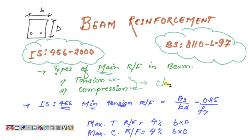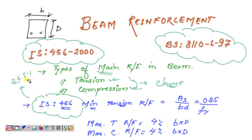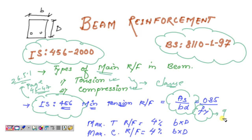For both types we have certain clauses in both international codes. Starting with IS 456:2000, we have Clause 26.5.1 on pages 46 and 47. The minimum tension reinforcement as per IS 456 Clause 26.5.1 is: As/(b×d) = 0.85/fy, where fy is the grade of steel, b is the width, and d is the effective depth of the RCC beam. The unknown is As, which we can easily obtain using this formula.